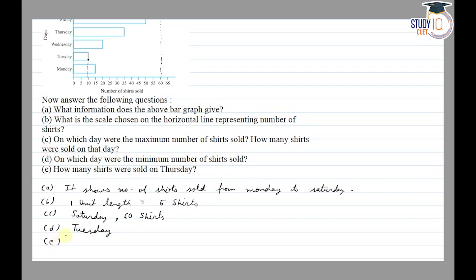Part (e): how many shirts were sold on Thursday? We will match Thursday with the horizontal scale. Here is our answer: 35 shirts. That's our final answer. Thank you.